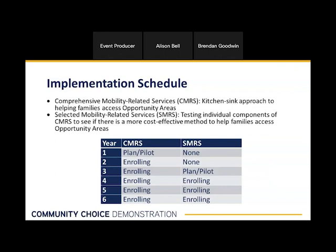We haven't determined yet what the SMRS will include. As an example — and this is not exactly what we'll do — it could be something like one site testing pre-move services only without implementing post-move services, so we could see how effective post-move services were. We aren't planning to decide on the SMRS until we have more experience implementing the CMRS and get feedback from participating sites. At the end of the study, we estimate that about 6,000 families will have received CMRS services, about 3,400 will have received SMRS services, and 6,000 families were assigned to the control group.